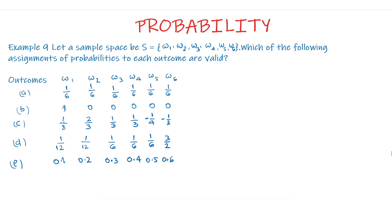We have been given outcomes ω1, ω2, ω3, ω4, ω5, and ω6. In Part A, the assigned probabilities are 1/6, 1/6, 1/6, 1/6, 1/6, and 1/6.